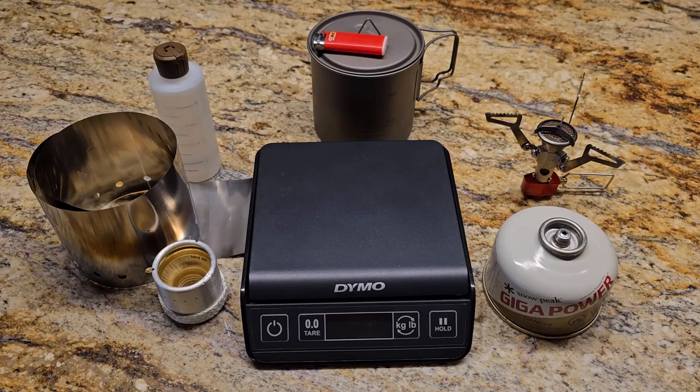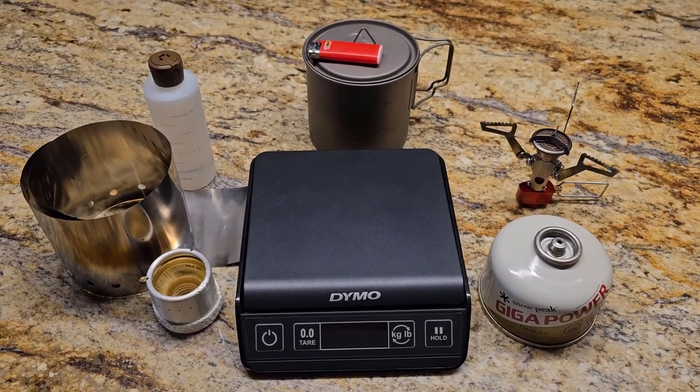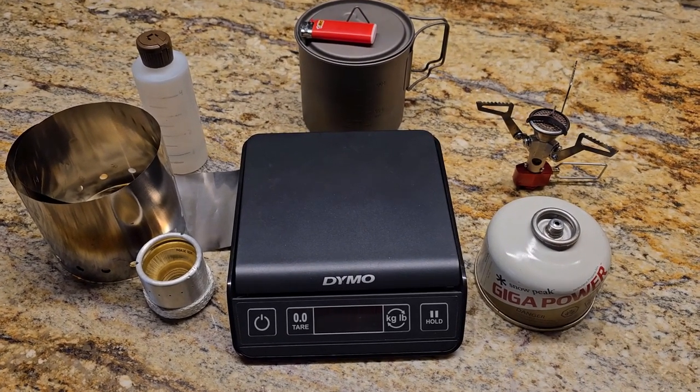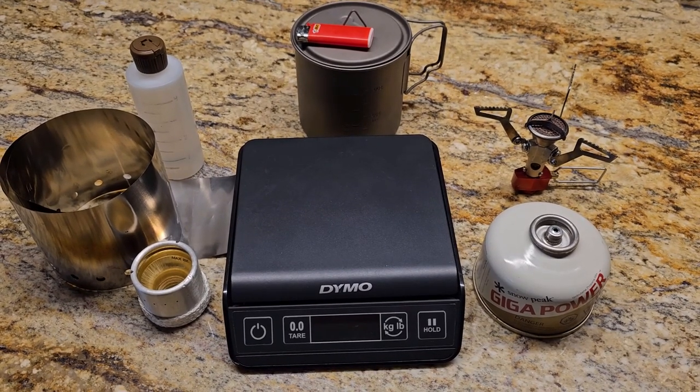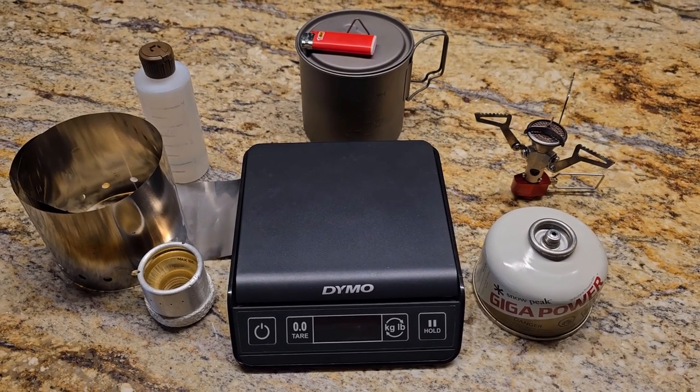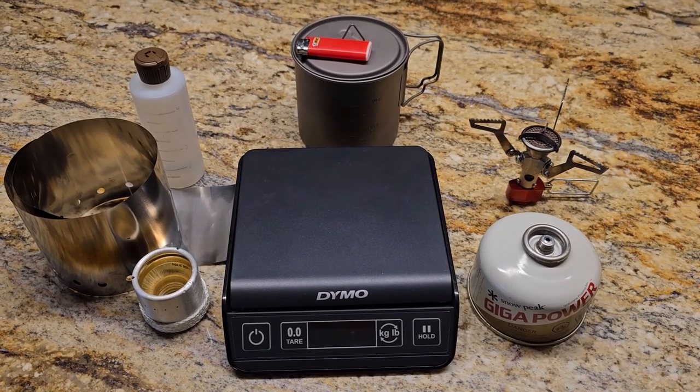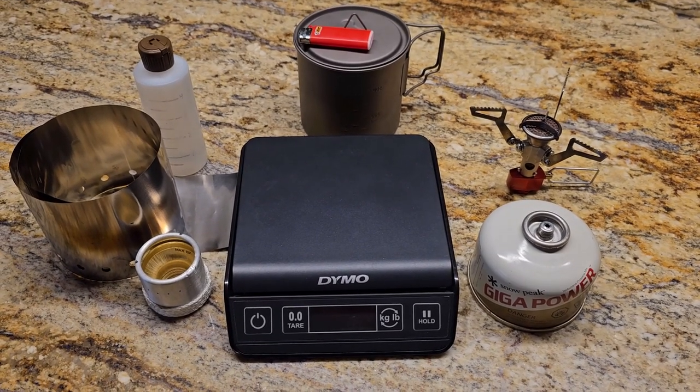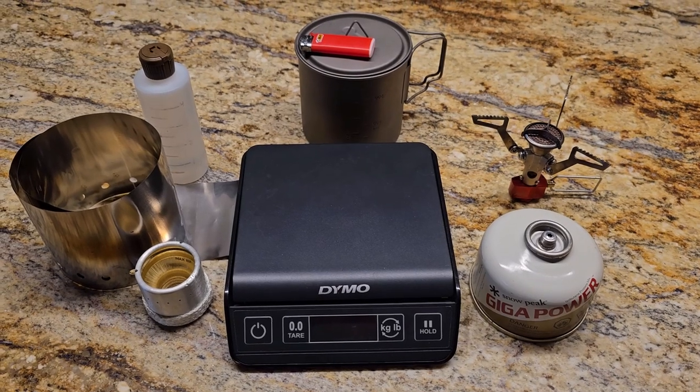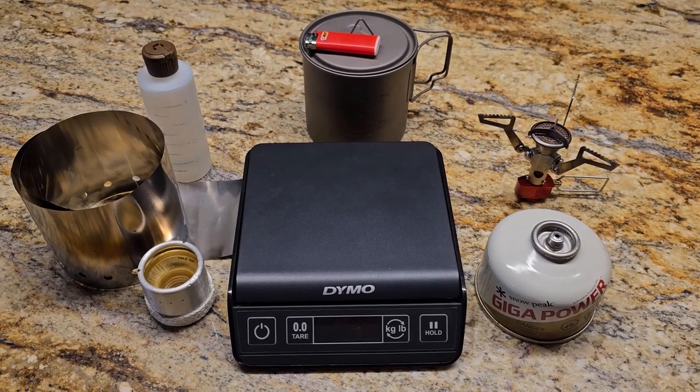So my original stove system, the one that I use now and that I primarily use, is there on the right. That is the Pocket Rocket 2 as well as a 110 gram fuel canister. Canister stoves are super easy to use, they're probably the most popular type of stove. There's really nothing to them - screw it on and light it and that's pretty much it.